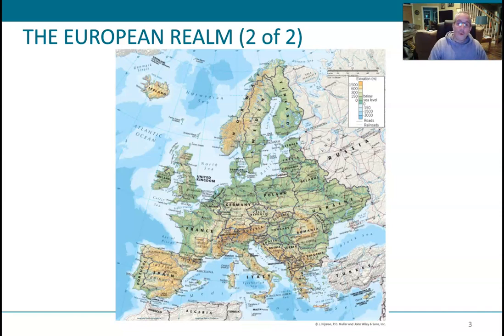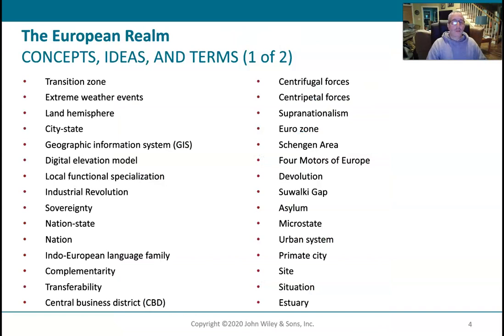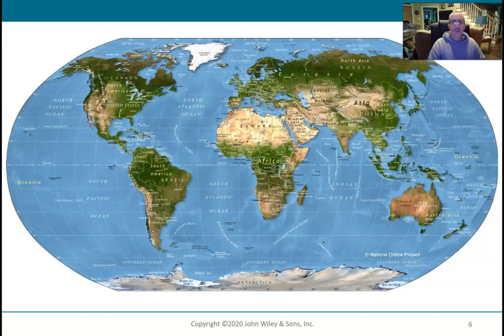Some of that European influence is positive and very good; some is not. We've already talked about the Americas — North, Middle, and South American realms — and the influence that European culture has had on those realms through colonization, whether voluntary or forced upon local and indigenous populations. Here's a world map to give you a little bit of scale.